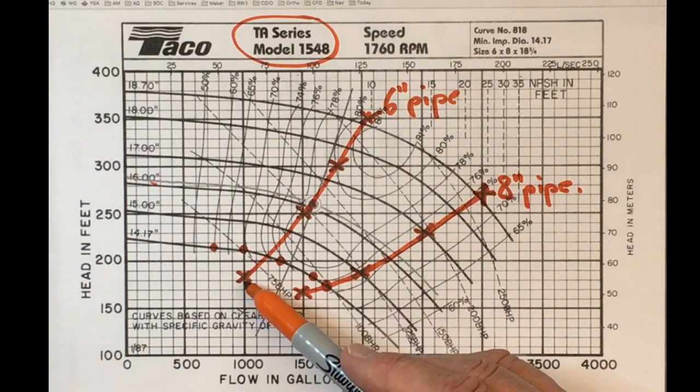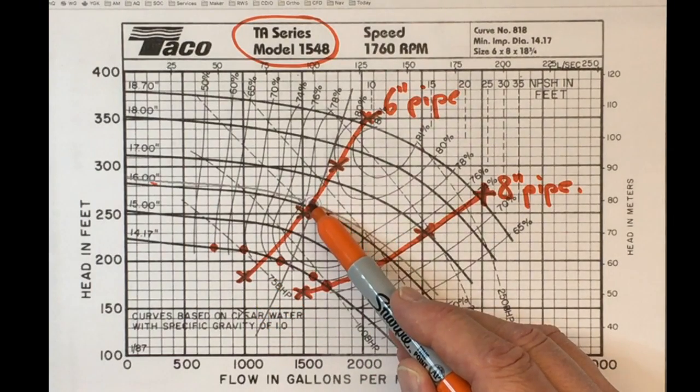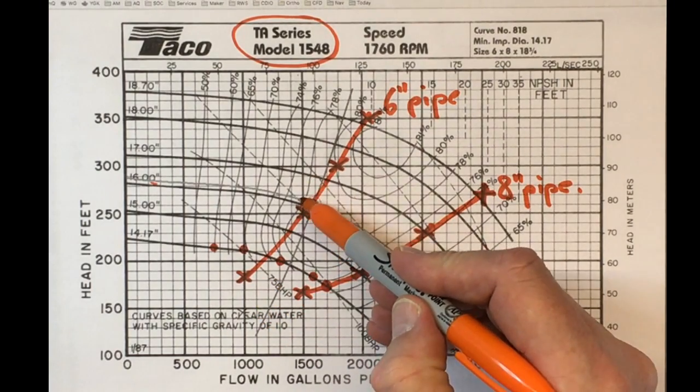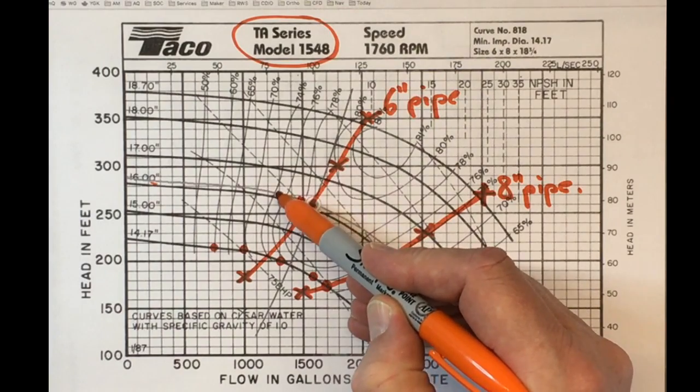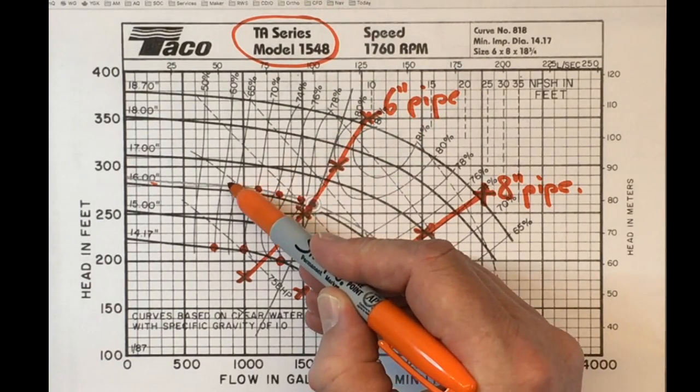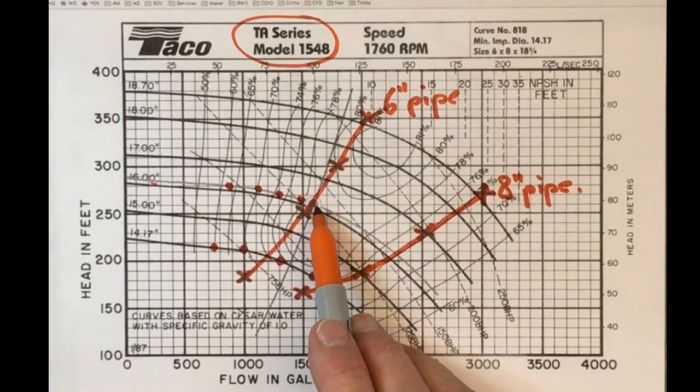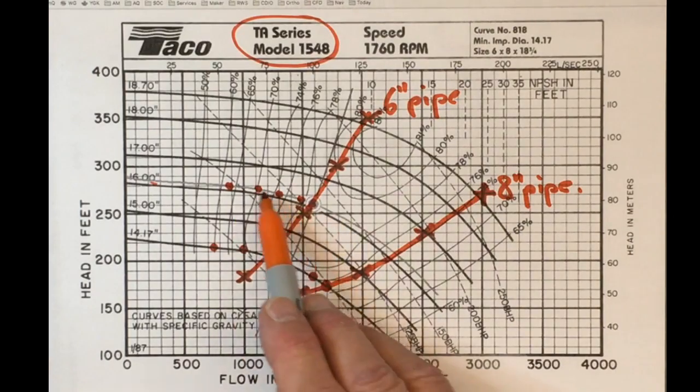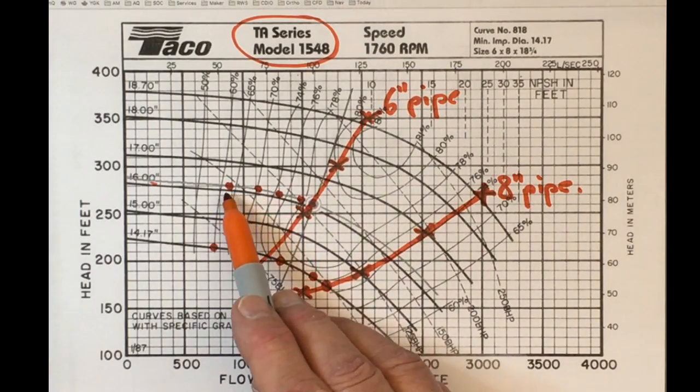Now if we went with the 6-inch pipe case up here, we could also throttle back and operate at any of those points along that pump curve.